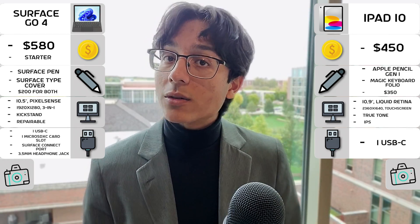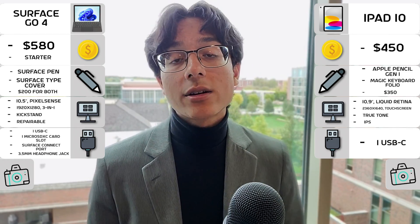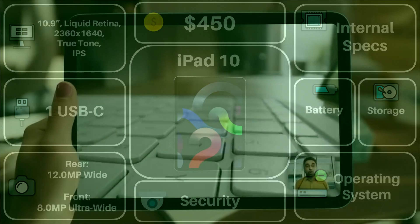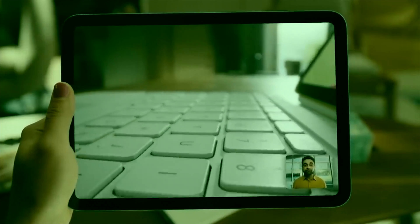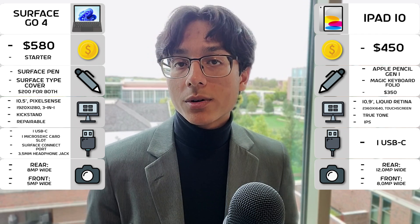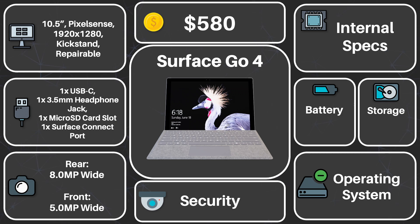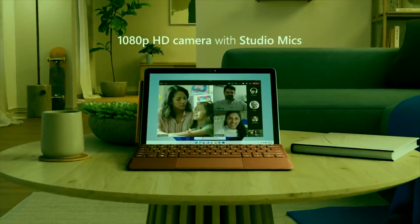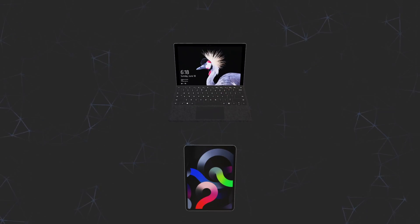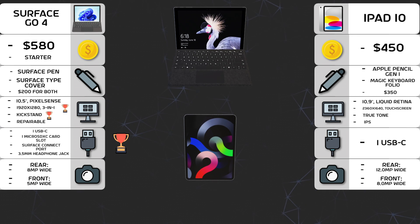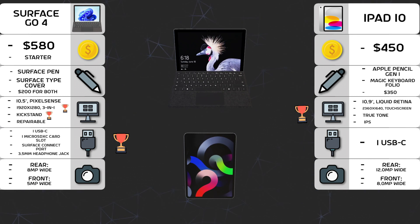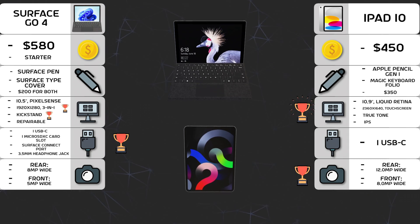For cameras, that goes to the iPad. Although both devices have their own proprietary features such as different background blurs, the iPad by the numbers is a bit better. However, the Surface still should be effective for Zoom meetings and calls, so there shouldn't be any issue either way. In summary for the externals, the Surface Go 4 has a more flexible form factor and connectivity, while the iPad has a higher resolution display and better camera setup.